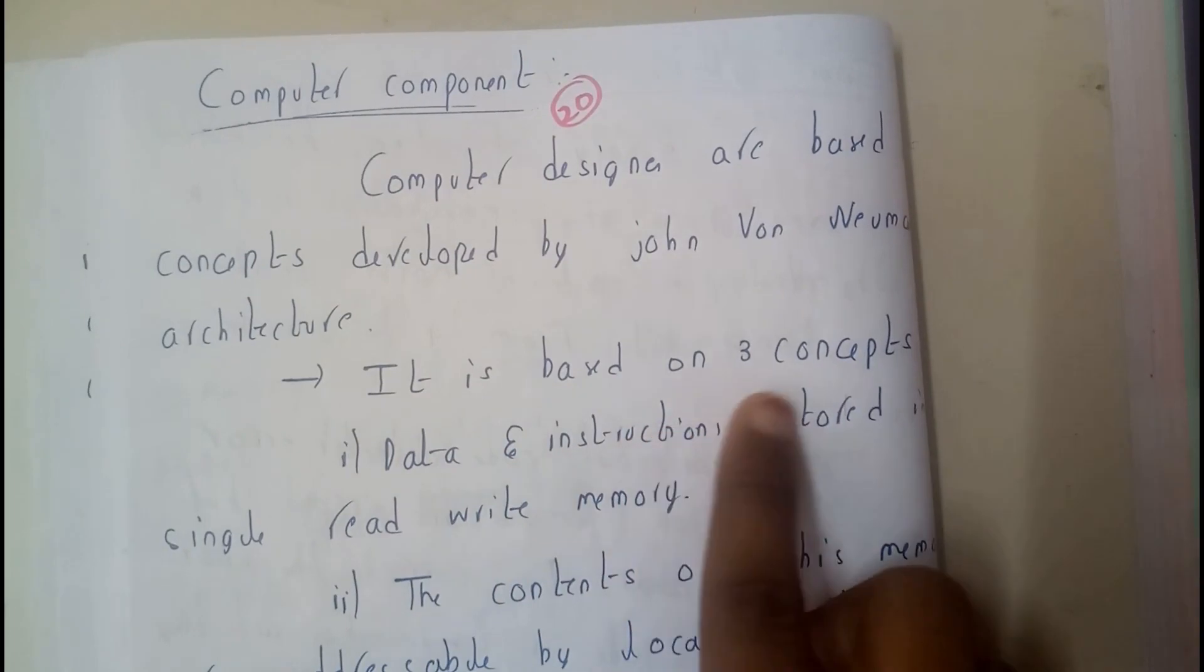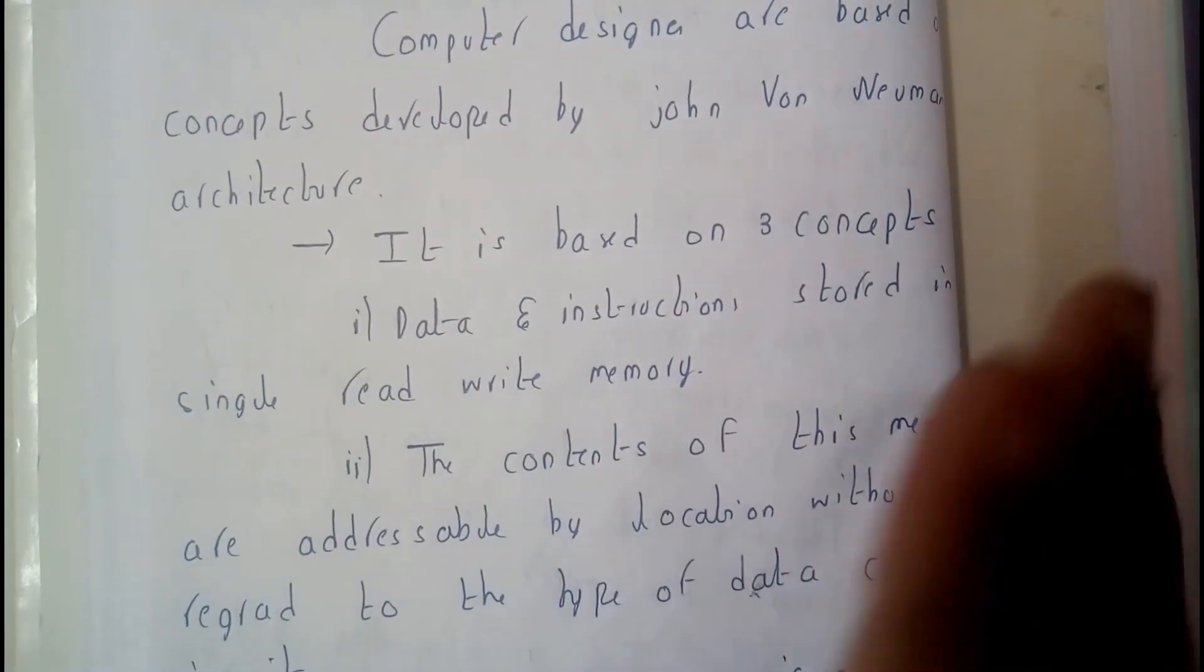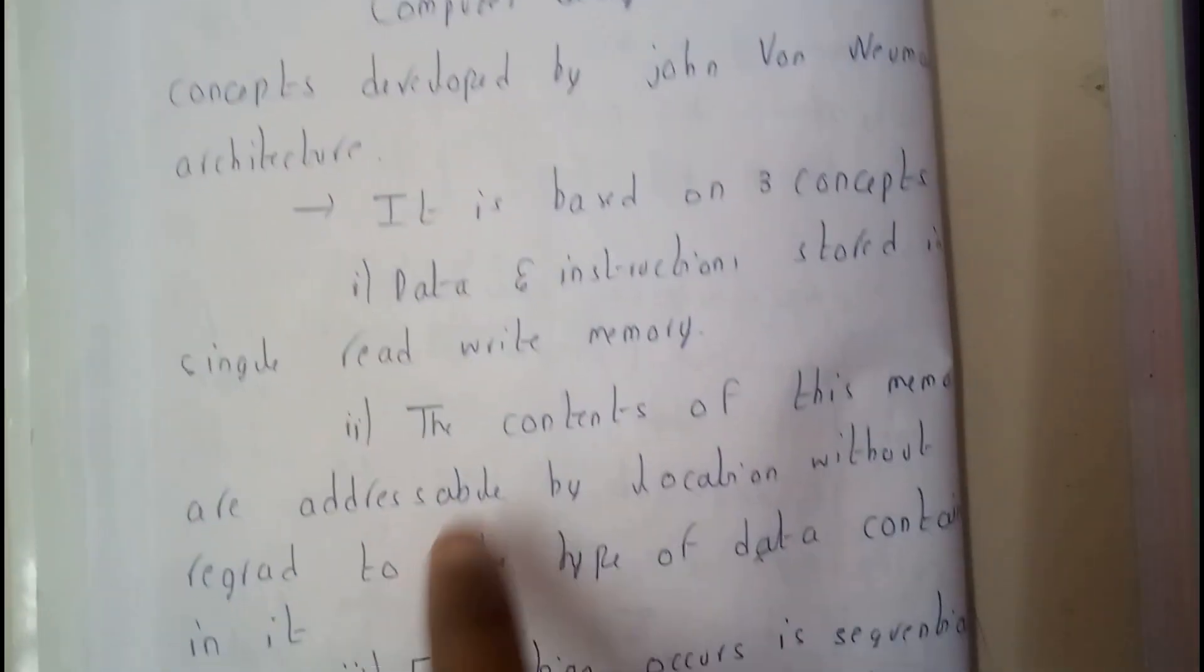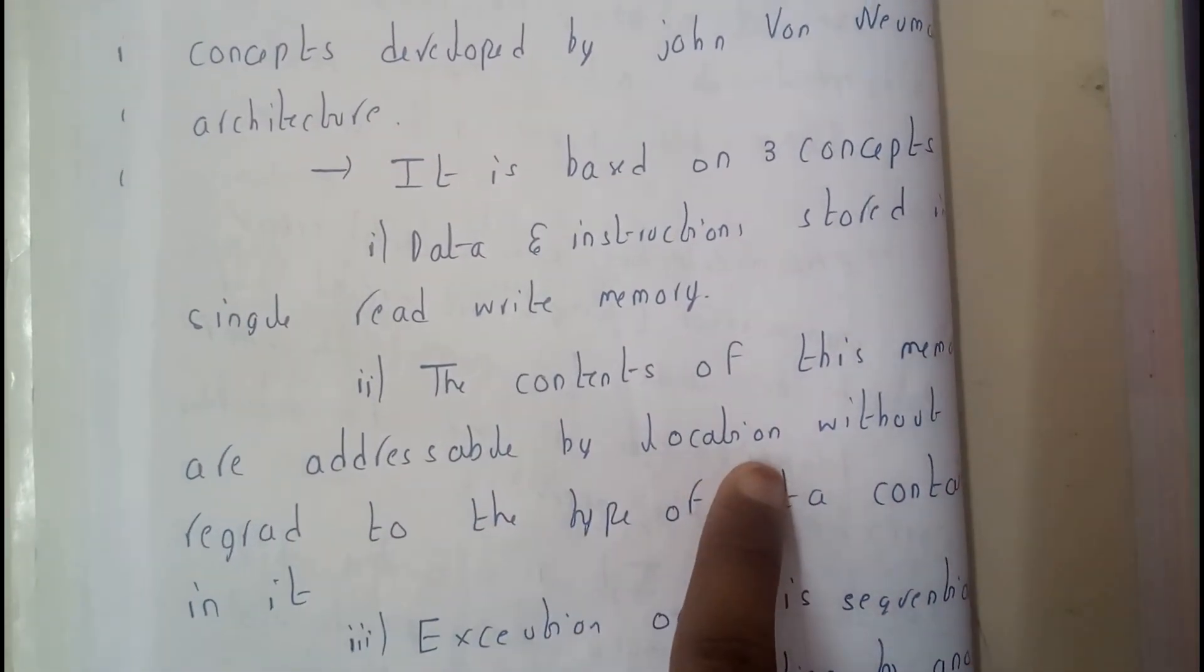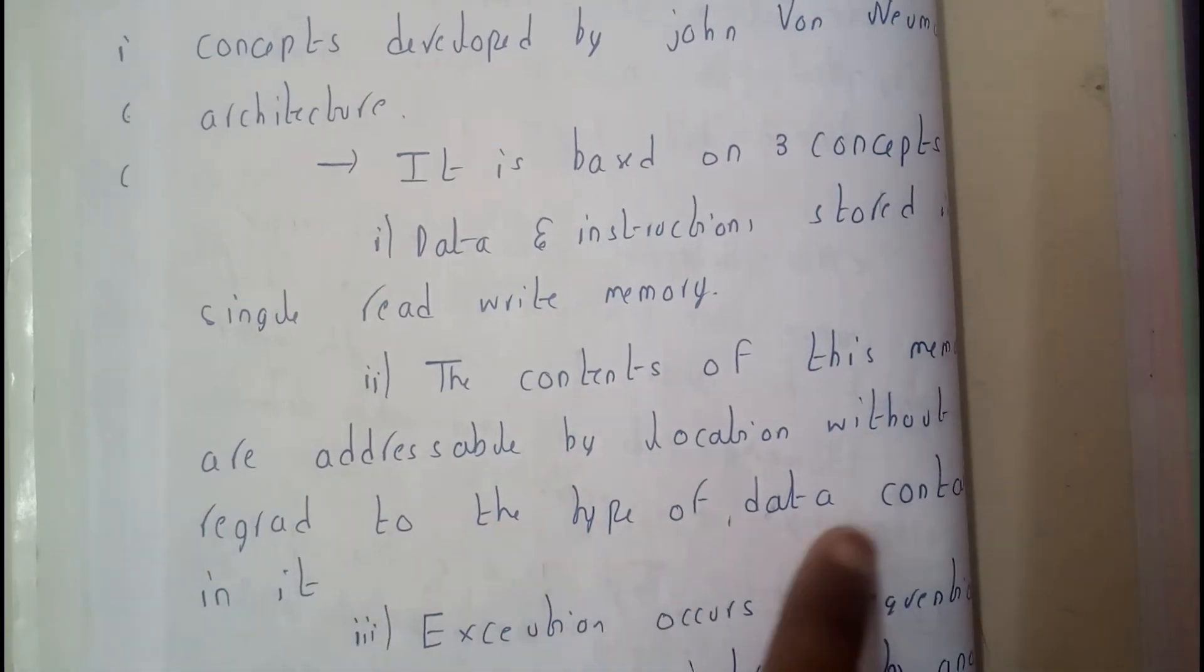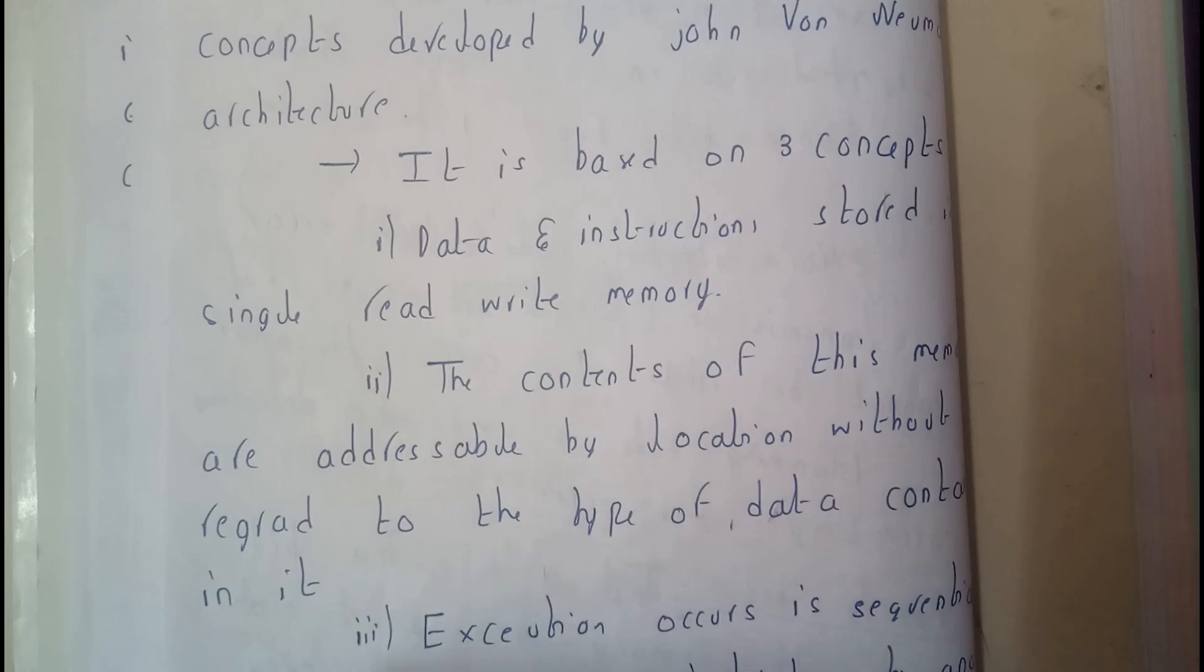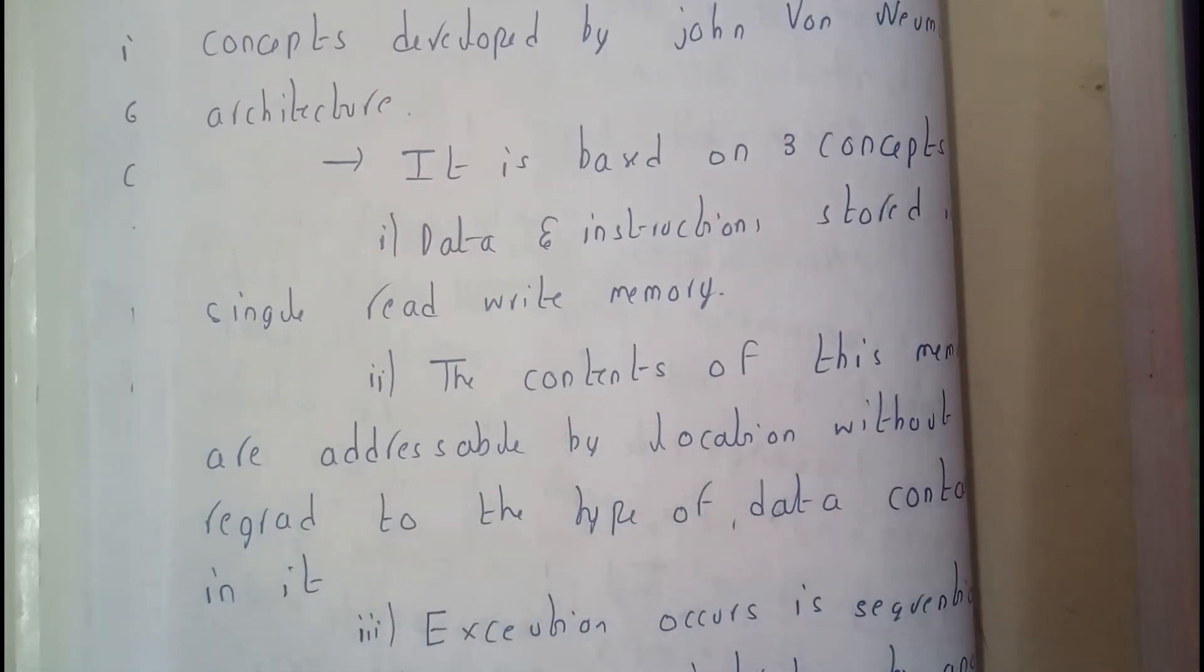So it is based on three important concepts. First, data and instructions are stored in a single read-write memory. The data and instructions are stored at a single place. The contents of this memory are addressable by locations without regard to the type of data contained in it. So each and every data or instruction has a particular address to access them.